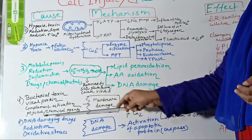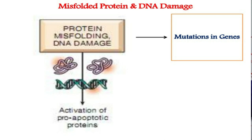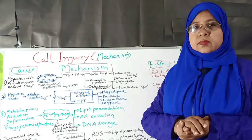The final mechanism of cell injury is DNA damage. DNA is damaged by various drugs, radiation, and oxidative stress. These agents cause DNA damage to such an extent that the cell cannot repair it at all. In this situation, activation of apoptotic proteins such as caspases causes apoptotic death of the cell.